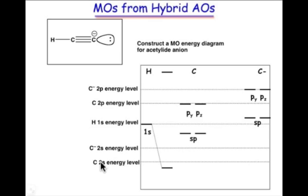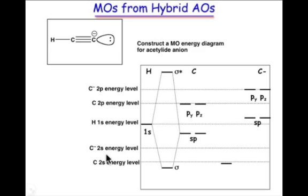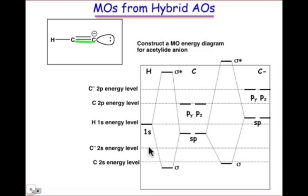Now let's construct our molecular orbitals. The sigma bond between carbon and hydrogen results from overlap of the 1s and the sp hybrid orbital, creating two new molecular orbitals — a bonding and an antibonding contribution. Between the two carbon atoms, one bond is a sigma bond resulting from an sp hybridized orbital on the neutral carbon and an sp hybridized orbital on the carbanion, also yielding a sigma bonding and sigma-star antibonding orbital.